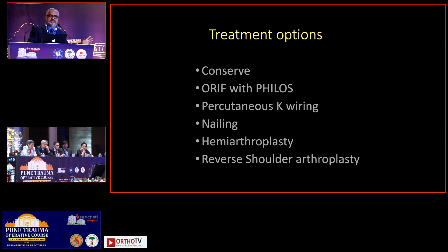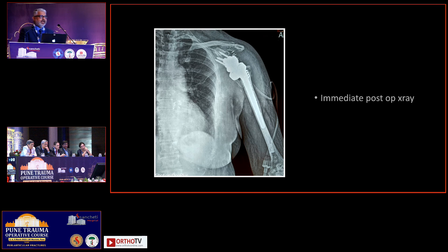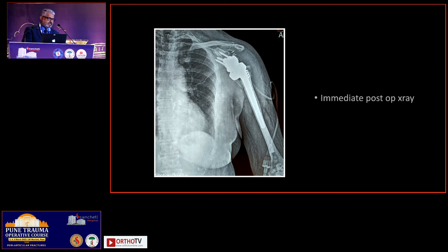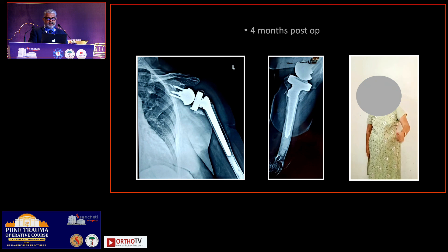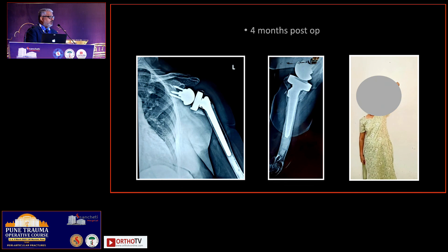A quick show of hands: how many would want to replace this, either a hemi or a reverse? No hands raised. I will show you what I did — I did a reverse for this patient because she was active. I did discuss conservative treatment. Remember, if you feel you can't fix a fracture in an elderly low-demand patient, you don't need to be aggressive about fixation — you can go conservative and they will get a functional range. She did fairly well; at around four months she was quite happy, shoulder pain-free, tuberosities healed, and she had no significant complaints.